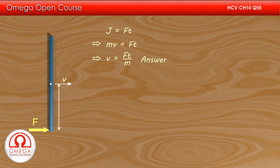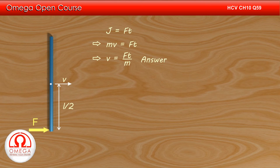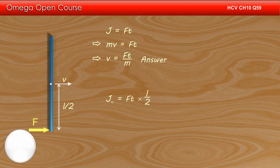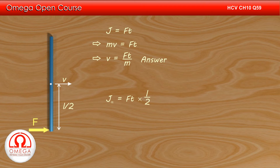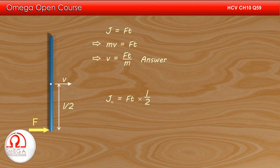Since the force is acting at the end point of the rod, its distance from the center of mass of the rod is L by 2. The angular impulse due to any force is equal to the linear impulse times the perpendicular distance of the line of action of the force from the point. Therefore, the angular impulse due to this force about the center of mass of the rod is FT times L by 2.